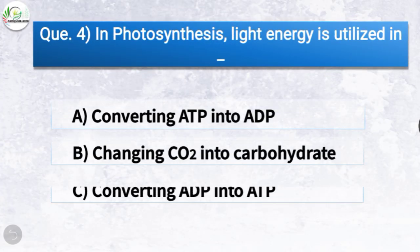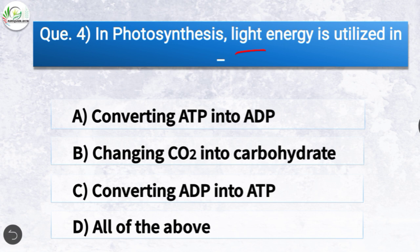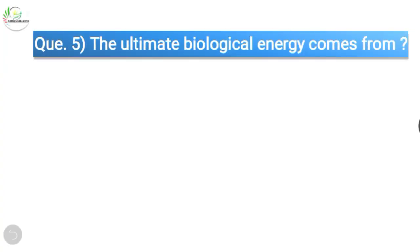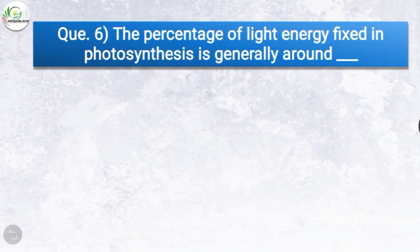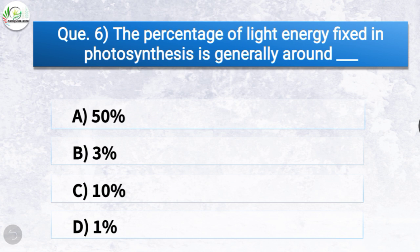Question 4: In photosynthesis, light energy is utilized in what? Options: converting ATP into ADP, changing carbon dioxide into carbohydrate, converting ADP into ATP, or all of the above. The correct answer is option C — converting ADP into ATP. Question 5: The ultimate biological energy comes from? The correct answer is option C, sunlight. Question 6: The percentage of light energy fixed in photosynthesis is generally around what? The correct answer is option D — one percent.